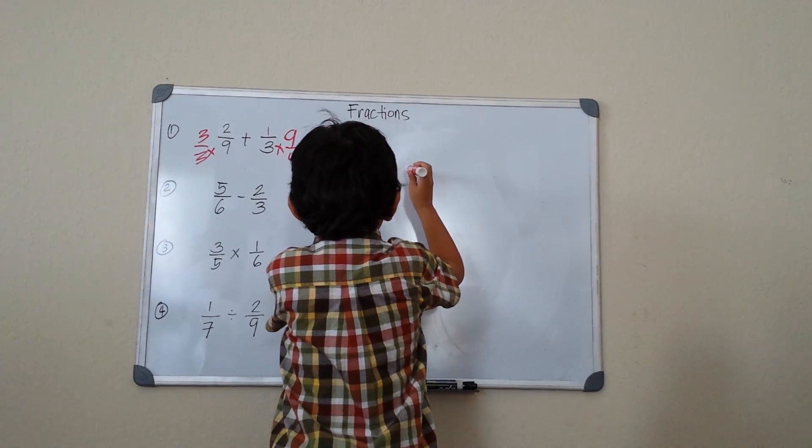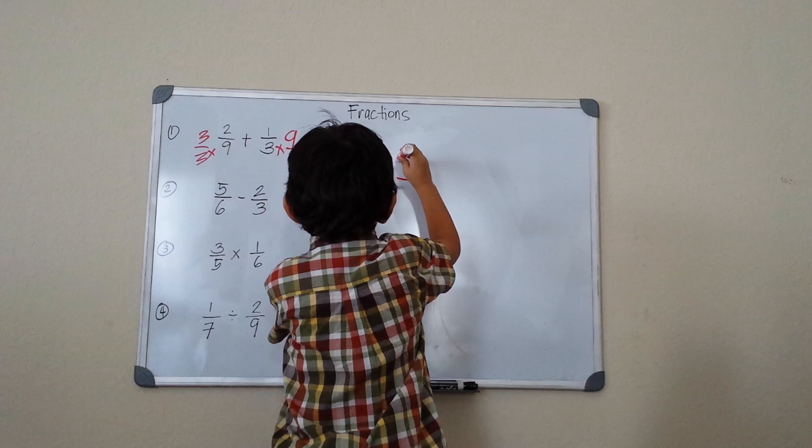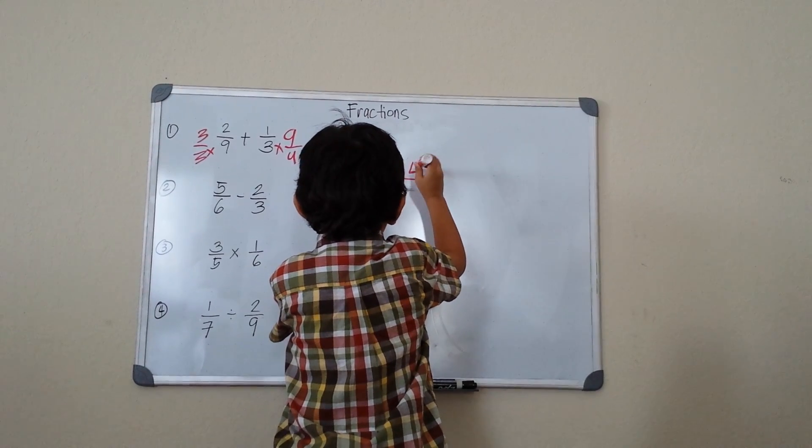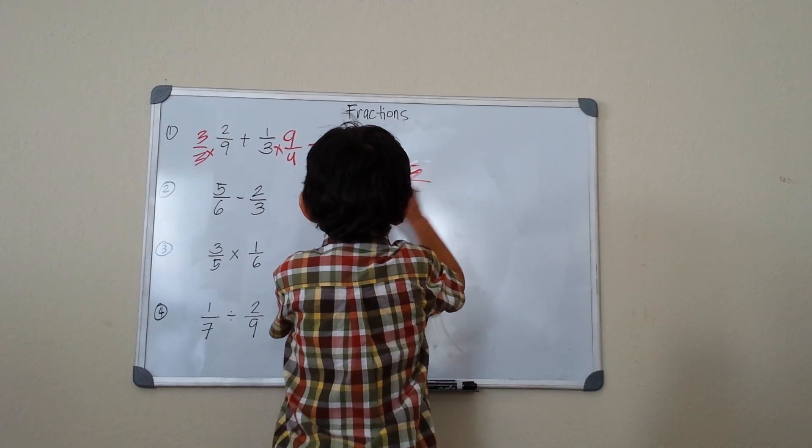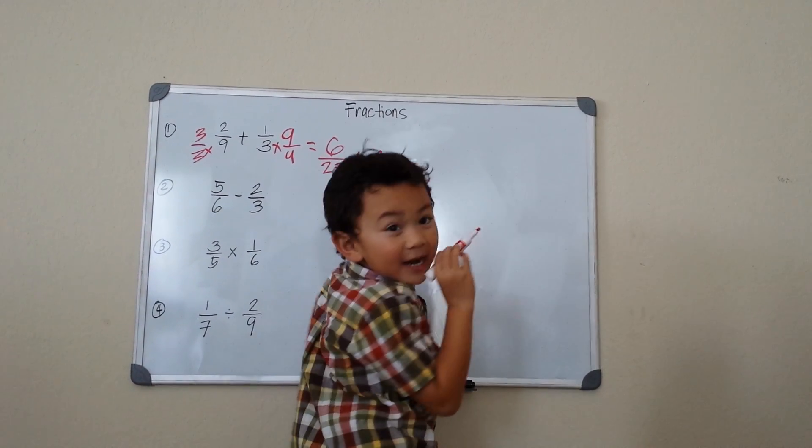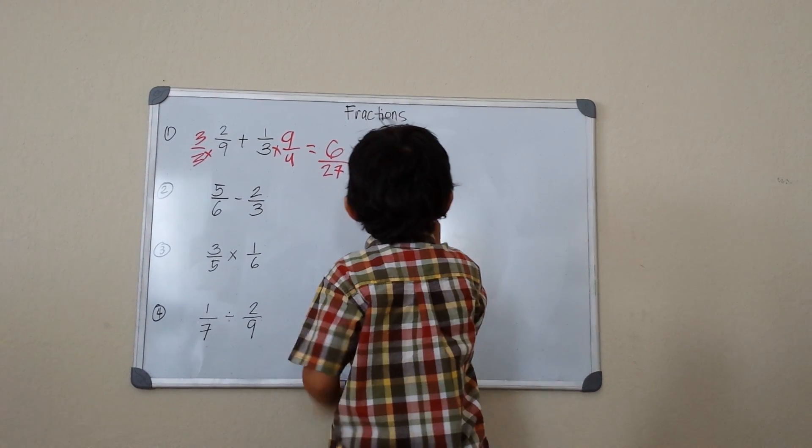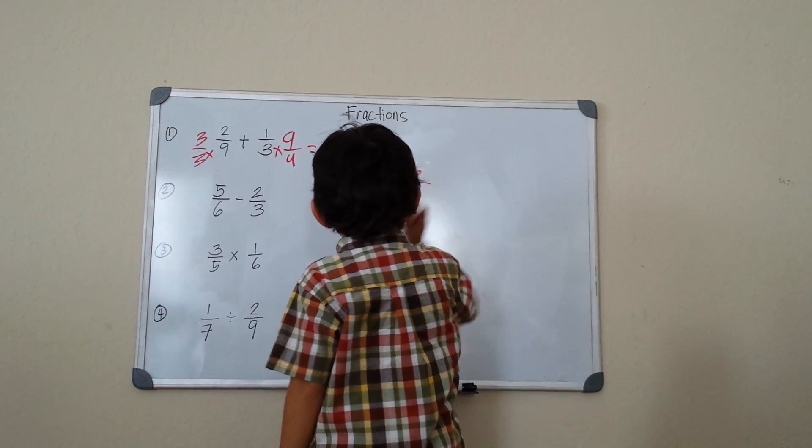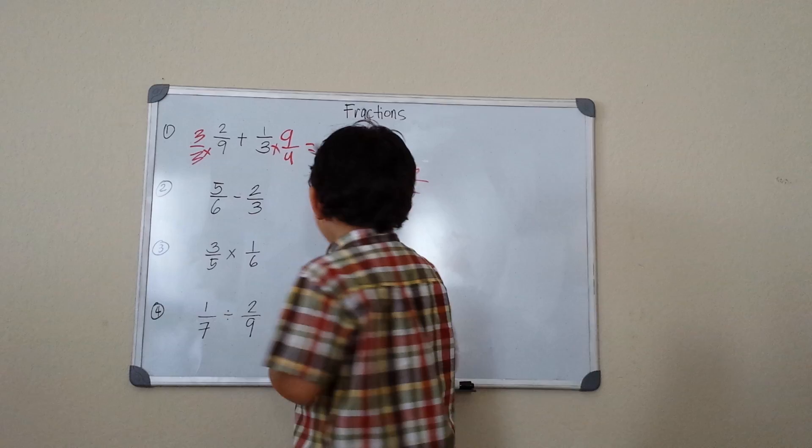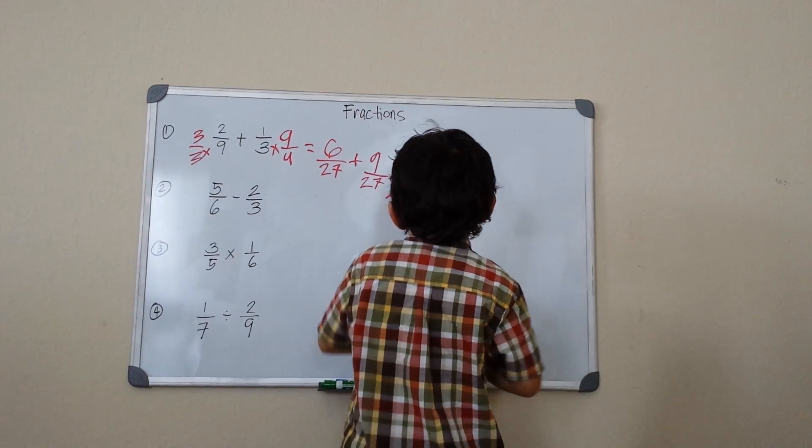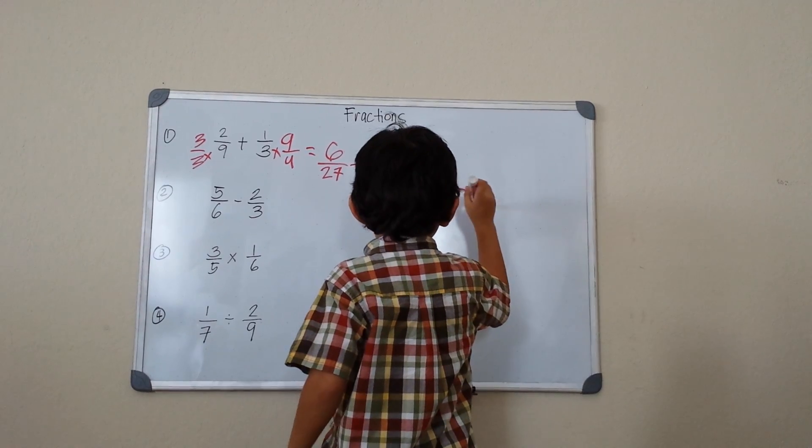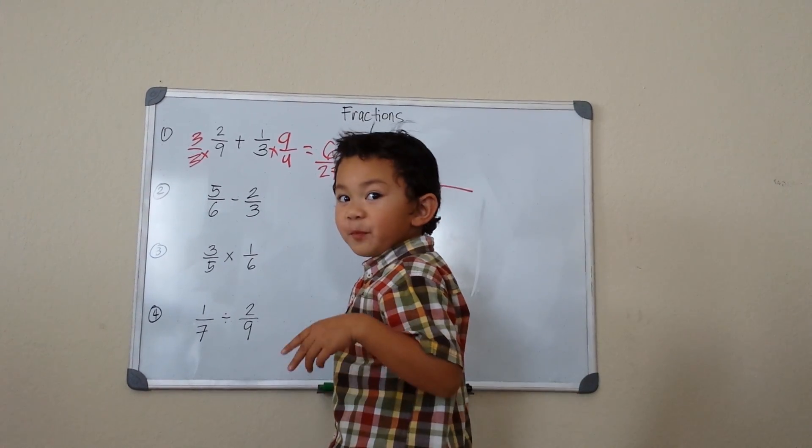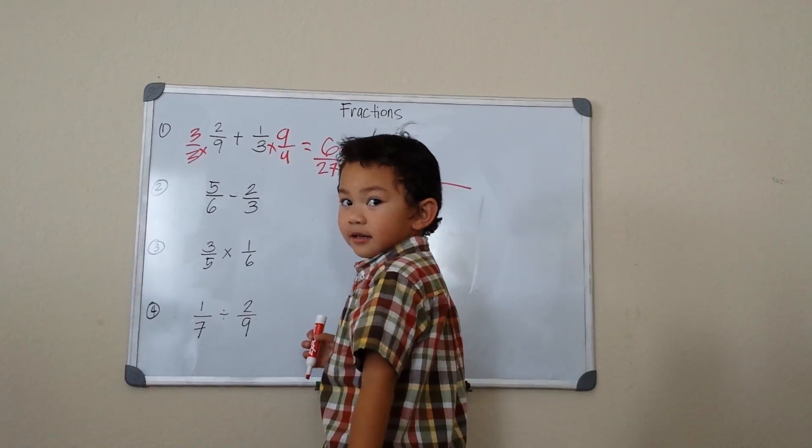Next we add together: 6 plus 9 will give me 15/27. I think we have to simplify it because 15 and 27 are multiples of 3.